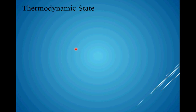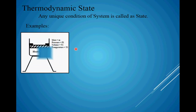What is thermodynamic state? In simple terms, we can define a thermodynamic state as any unique condition of a system. Consider we have a container with heated gas inside it and a piston which is restricted. At this point, the various properties of the system will have certain values — mass equals M, pressure equals P1, volume equals V1, temperature equals T1. These values of each property indicate the condition at which the system is present, and taken together, they represent a unique condition — the state of the system.